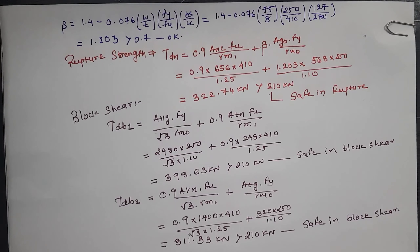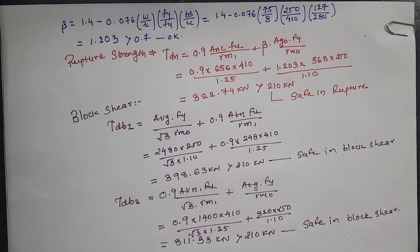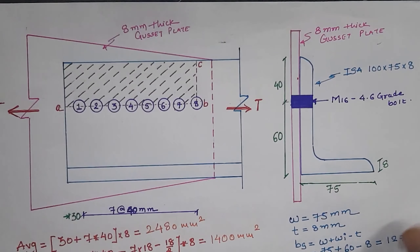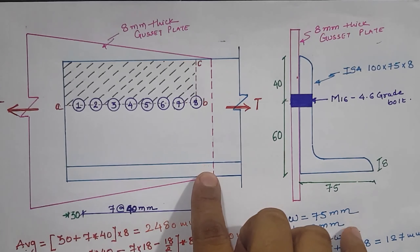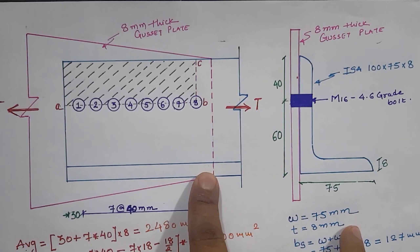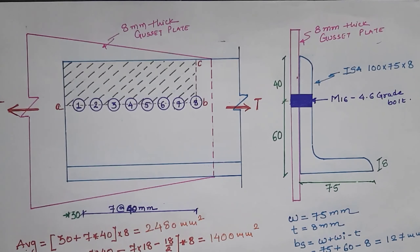The connection is safe in yielding, rupture, as well as block shear. This means we can provide 8 numbers of bolts as shown in the figure, which can safely carry 210 kN as the design load. Thank you.